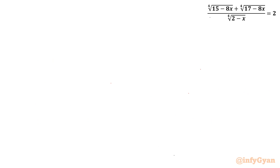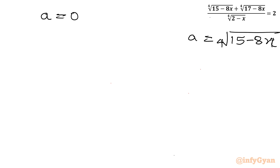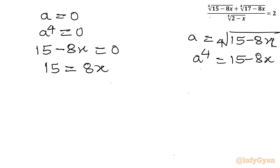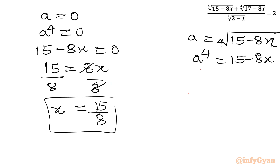Let's solve both. For a equals 0: 'a' was the 4th root of (15 minus 8x). Taking the 4th power of both sides gives a⁴ equals 0, so 15 minus 8x equals 0. Adding 8x to both sides: 15 equals 8x. Dividing both sides by 8 gives x equals 15 over 8, which is 1.875.